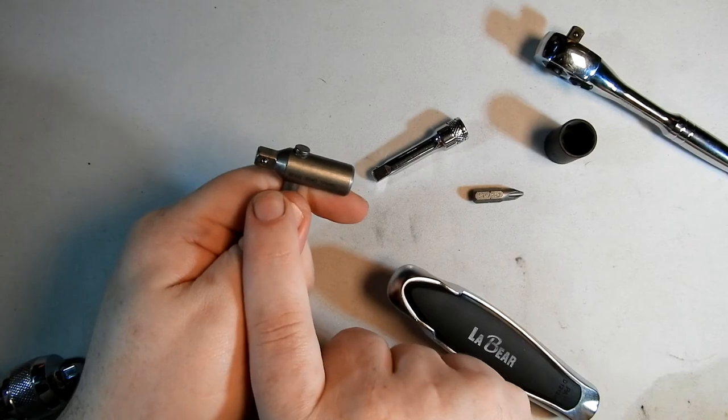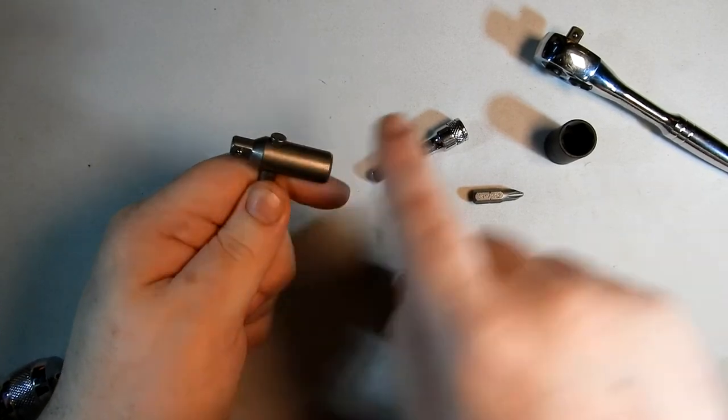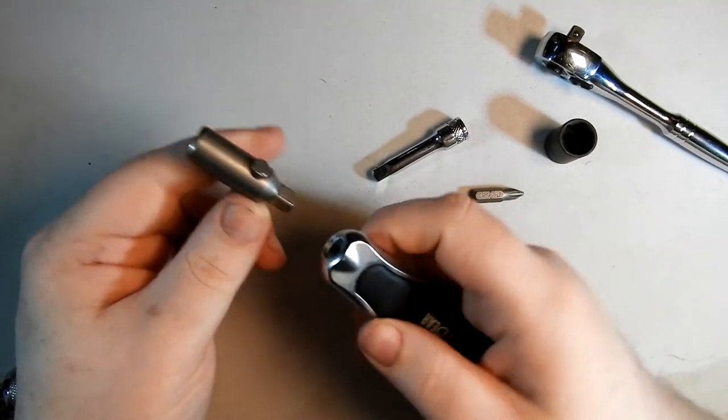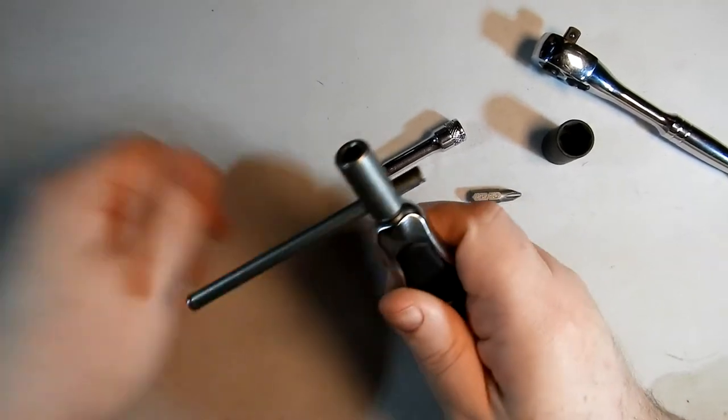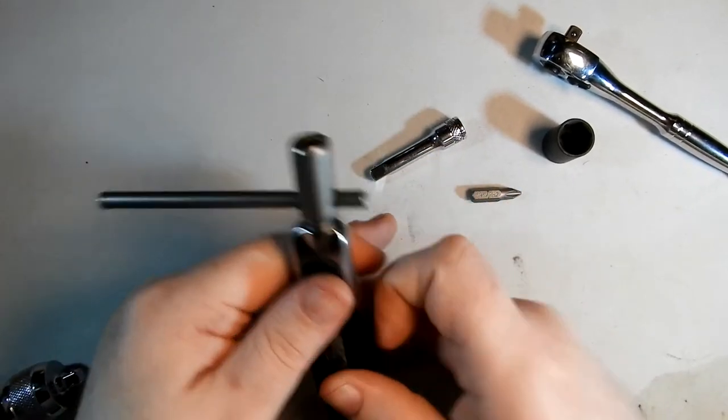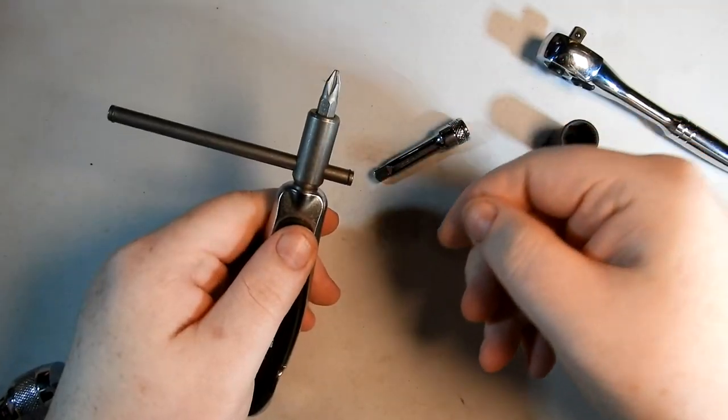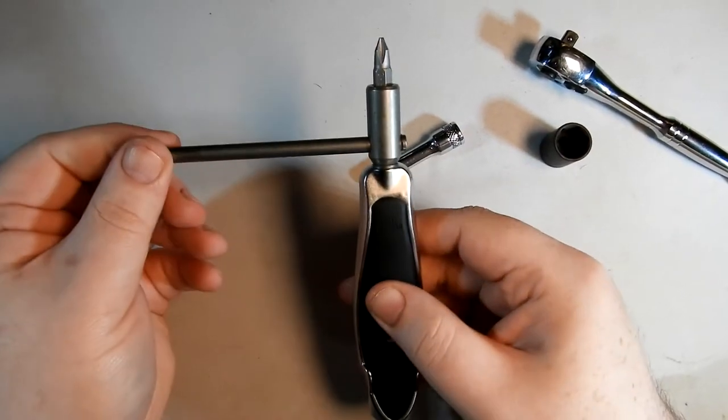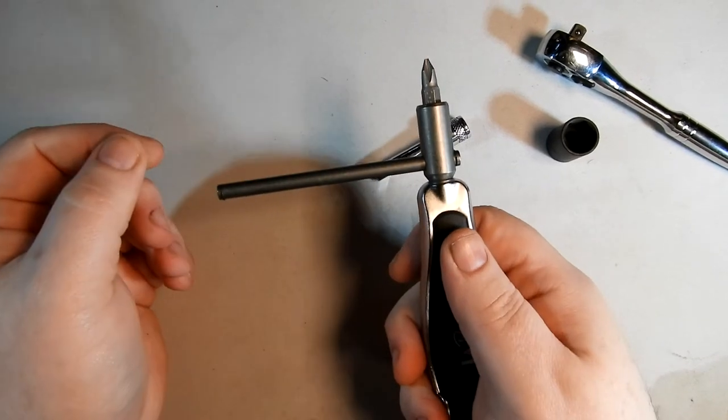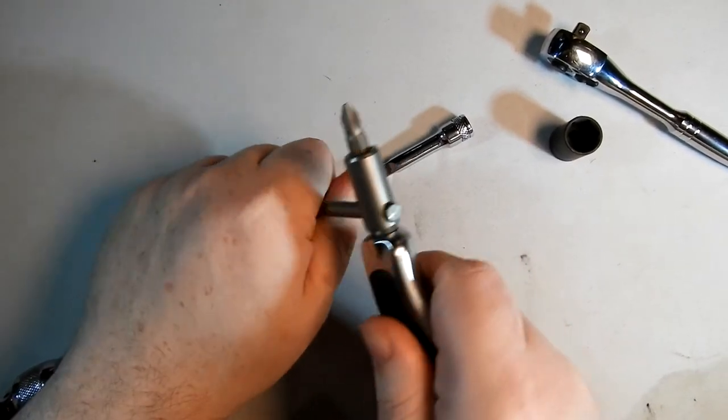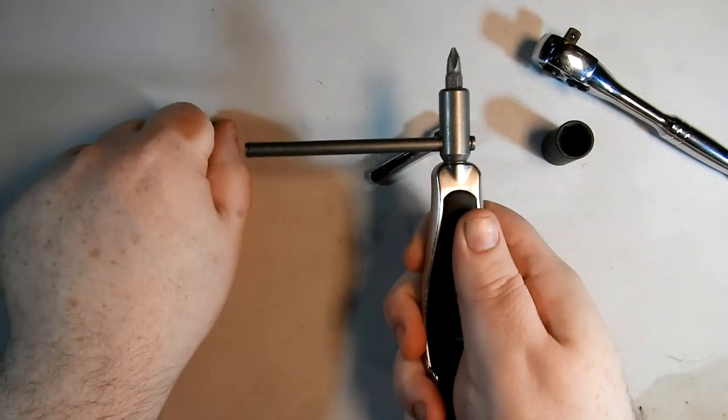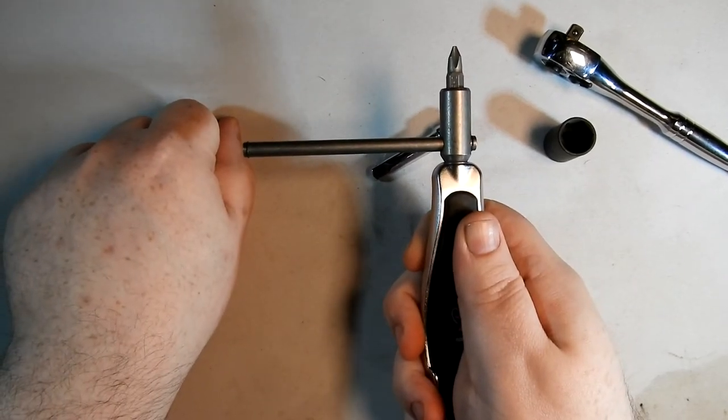Since this has the socket and the hex, what you can do with this is put that on the end there, and you can put hex bits in there. So what you have now is a manual screwdriver with an arm, so you can really generate a lot of torque. Pretty cool.